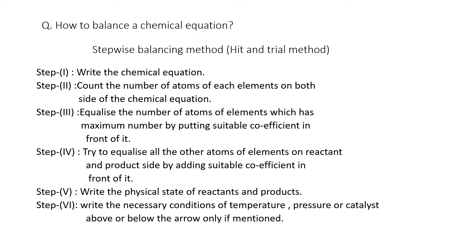In step number two, you have to count the number of elements present on both sides of the chemical equation. As you know, there are two sides of the equation — one is the reactant side and another is the product side. You have to count the number of atoms of every element present on each side.